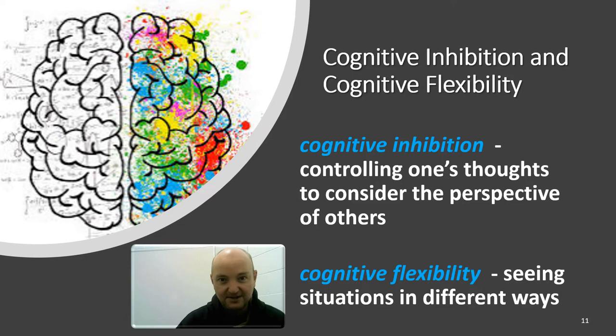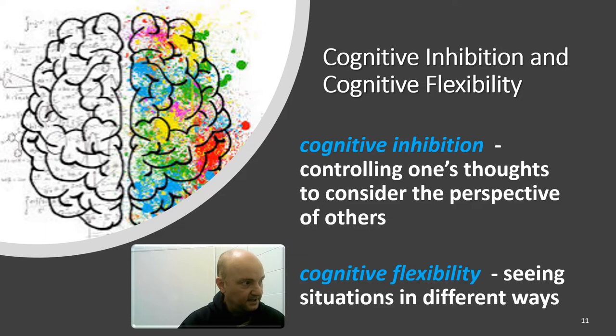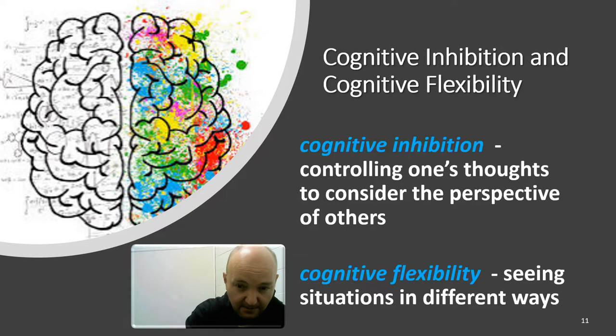Carl Jung had a concept called active imagination — you could actually reach deep places through a relaxed, super advanced, engaged, and prompted daydreaming — dreaming while awake. He thought that because you're using your full faculties, you could get to even deeper places than in meditative or trance states. If you're interested, look up active imagination by Carl Jung — spelled with a J.